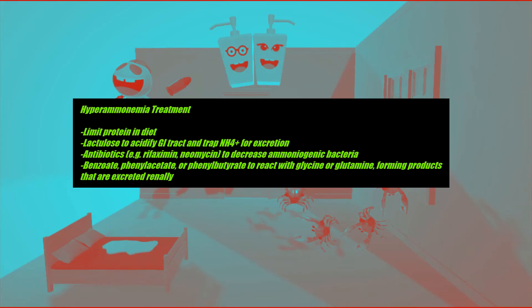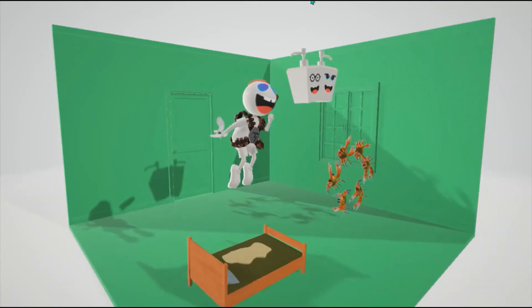For treatment of hyperammonemia: limit protein in the diet to reduce ammonia production. Other approaches include lactulose to acidify the GI tract and trap ammonium for excretion; antibiotics such as rifaximin and neomycin to decrease ammoniogenic bacteria; and benzoate, phenyl acetate, or phenyl butyrate to react with glycine or glutamine, forming products that are excreted renally.